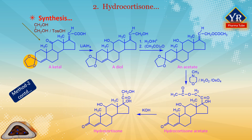The resulting product is reduced by lithium aluminum hydride. During this, the carboxyl and keto groups at C11 are reduced to alcohol groups, forming a diol. The ketal protecting group is subsequently removed in acidic conditions, during which the double bond again migrates back to the initial position between C4 and C5, and the primary hydroxyl group is acetylated by acetic anhydride in pyridine. The double bond in this compound is oxidized using hydrogen peroxide in the presence of osmium tetroxide in N-methylmorpholine, forming hydrocortisone acetate. Hydrolysis of the acetyl group with potassium hydroxide gives hydrocortisone.